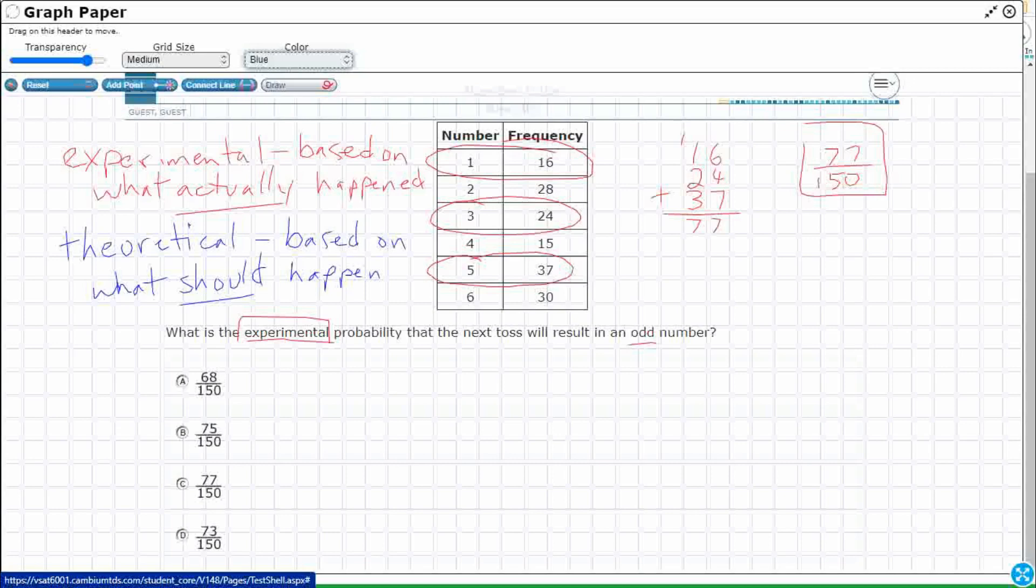What should happen? Well, what are the chances that I get an odd number? Well, half. Half the numbers are odd. Half the numbers are even, right? So if I were to toss it 150 times, right? Well, I need to make an equivalent fraction with 150 as my denominator. So, right, we're going to multiply by 75.